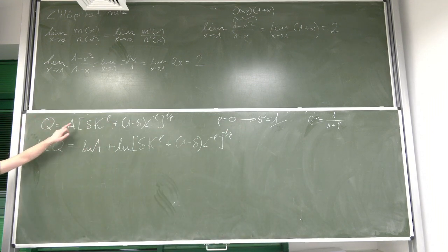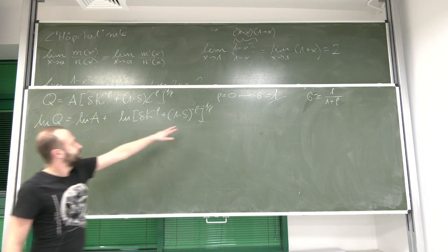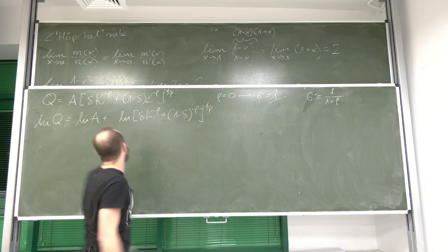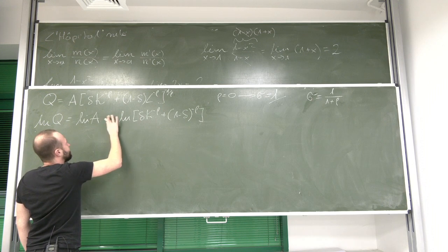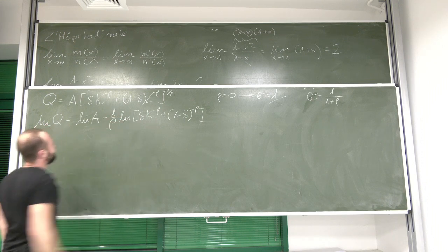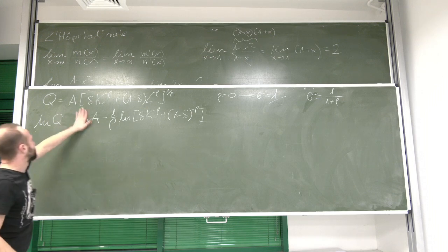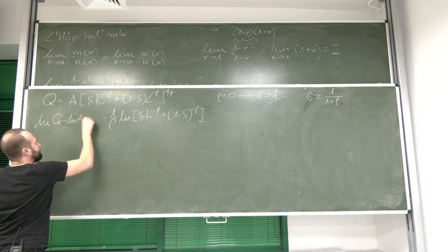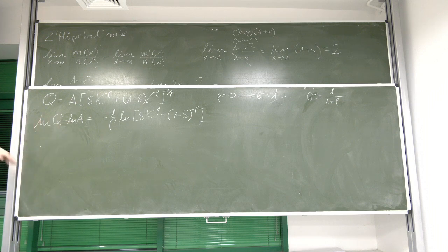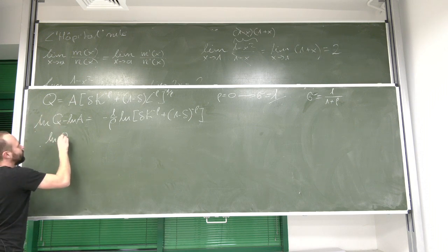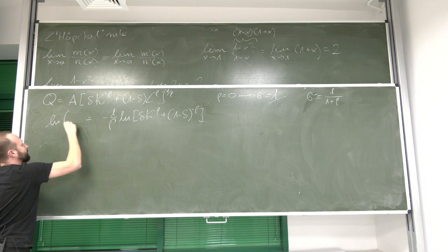So I'm getting logarithm of Q is equal to logarithm of A plus natural logarithm of the rest of the expression. We remember the rule, the logarithm of a product is the sum of logarithms. Also, we see that the exponent over here can be taken into the front of the logarithm. So we're going to have negative 1 over rho. The next thing I can do over here is to move ln A to the other side of the equation. And knowing the property of the logarithms, that the difference of the logarithms is the logarithm of a quotient, we get that this is ln Q over A.